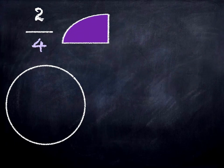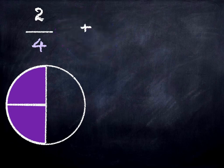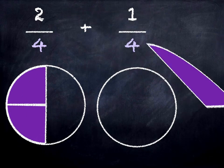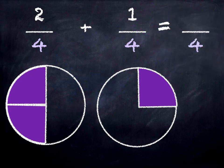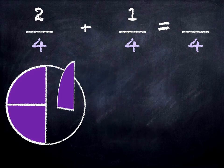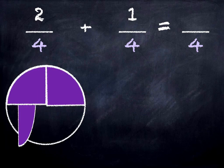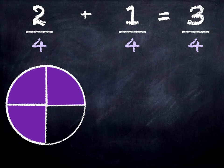Two quarters — there's our two quarters — plus one quarter is how many quarters? What do we have all together? Let's put them into one place and then we can see we've got three quarters. So two quarters plus one quarter is three quarters, and the sum we're doing is just with the numerators: two plus one.